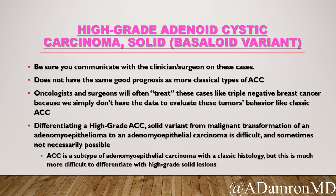In our case, we called this a high-grade adenoid cystic carcinoma, solid or basaloid variant. The most important takeaway is that when you have a case like this, you need to communicate with the clinician and surgeon to be on the same page: this is staining like an adenoid cystic, it has basement membrane-like material, but it's high grade - this is not a traditional adenoid cystic carcinoma. Often what I've seen is oncologists and surgeons treating these essentially like triple-negative breast cancer - offering chemotherapy and radiation - because we just don't have the data on clinical behavior. Differentiating high-grade ACC solid variant from malignant transformation of adenomyopithelioma to adenomyoepithelial carcinoma is difficult and sometimes may not even be possible. If you get the t(6;9) translocation on molecular testing, great - but if it comes back negative, you're still in a difficult spot since 10% of ACCs won't have that translocation.